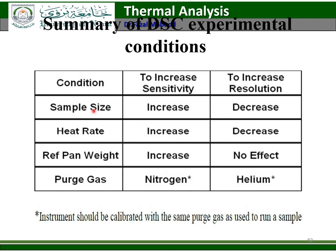Sensitivity versus resolution trade-offs: to increase sensitivity, increase sample size, increase heating rate, and use nitrogen as purge gas. To increase resolution, decrease sample weight, decrease heating rate, and use helium. Reference pan weight has no effect. So, if you want to increase resolution, you decrease sample size, decrease the heating rate, and use helium. If you want to increase sensitivity, increase the sample size, increase the heating rate, and use nitrogen.